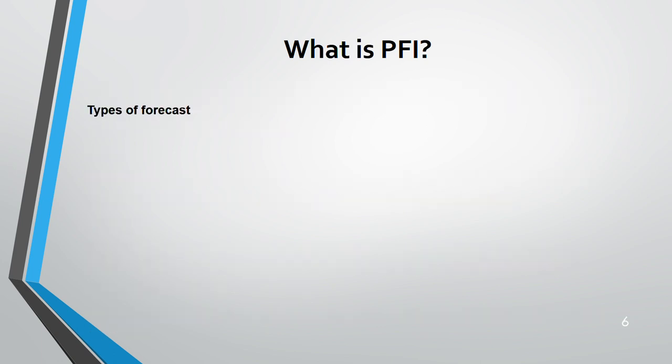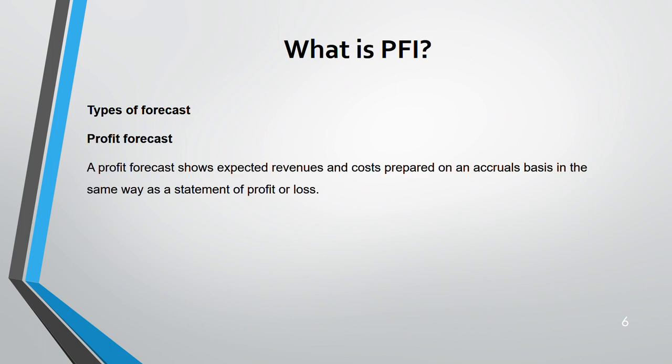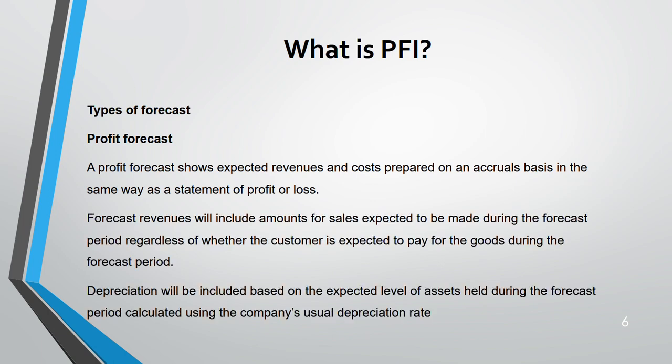Forecasts are of two types: profit forecast and cash flow forecast. A profit forecast shows expected revenue or costs and is prepared on an accrual basis, similar to a statement of profit and loss. For a profit forecast, you need revenue to calculate profit — it could include expected sales over a forecast period of, say, three to five years. Depreciation is also included based on the entity's assets.